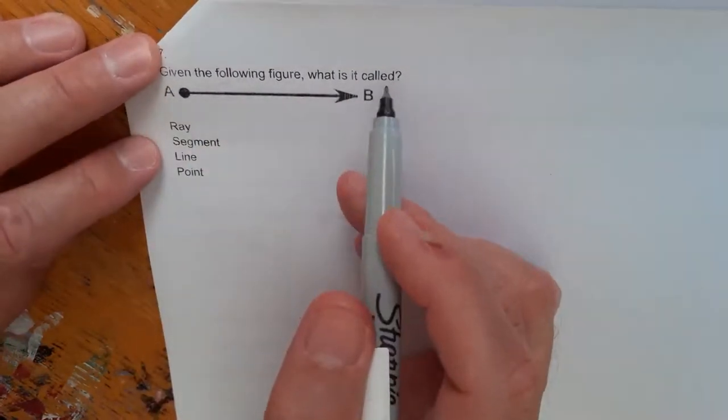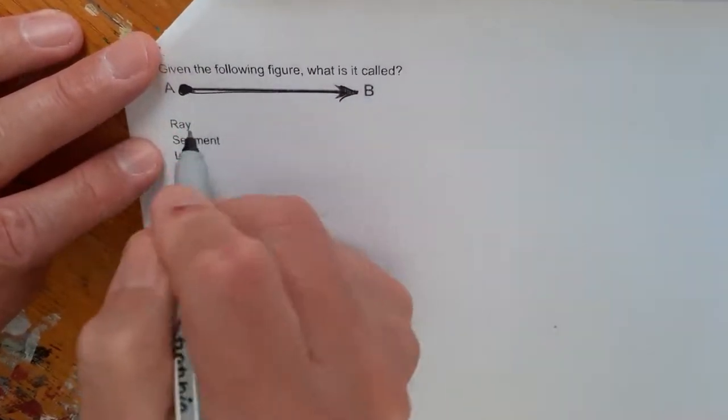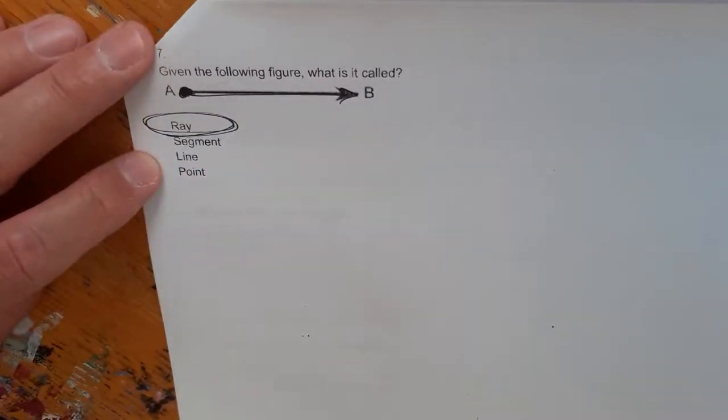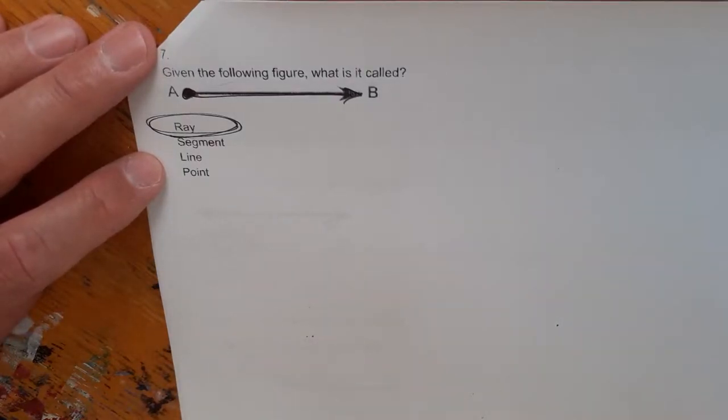Given the following figure, what is it called? This one starts at a point, and it goes in one direction forever. This is a ray. So this is a pretty easy lesson. It's just the different shapes, but now we will start to use these shapes in the rest of geometry to do a lot more complicated things.